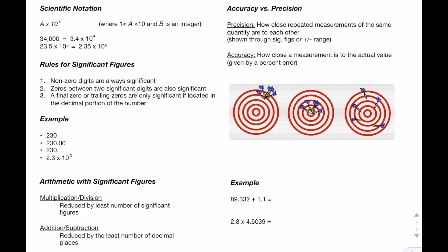Next, we'll be talking about significant figures, and there are three main rules. Starting off with non-zero digits always being significant, then zeros between two significant digits are also significant, and lastly, a final zero or trailing zero is only significant if it's located within the decimal portion of the number. So for the first example, we have the number 230. According to rule 1, 2 and 3 are significant digits, but zero is not according to rule 3 because it is not located within the decimal portion. So that means we have two significant digits in the first example.